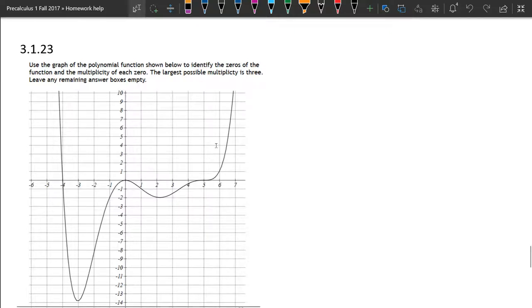We're looking at zeros of a polynomial function. In this problem 3.1.23, we are given a graph and we want to write down the zeros and the multiplicity. Let's go ahead and not use the black marker because that looks just like everything on the graph. We'll just build these in.